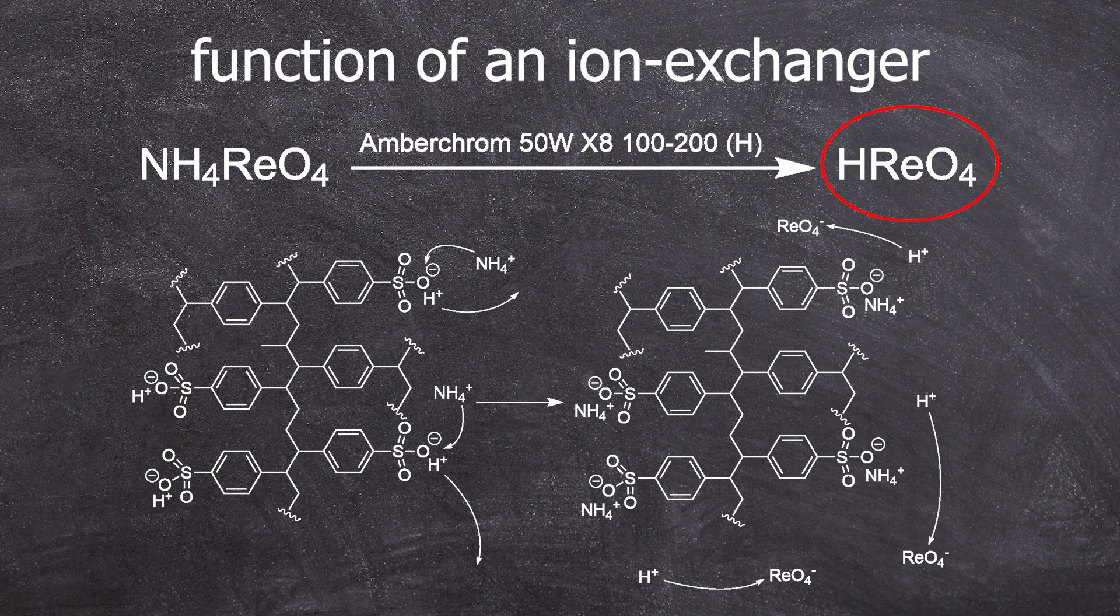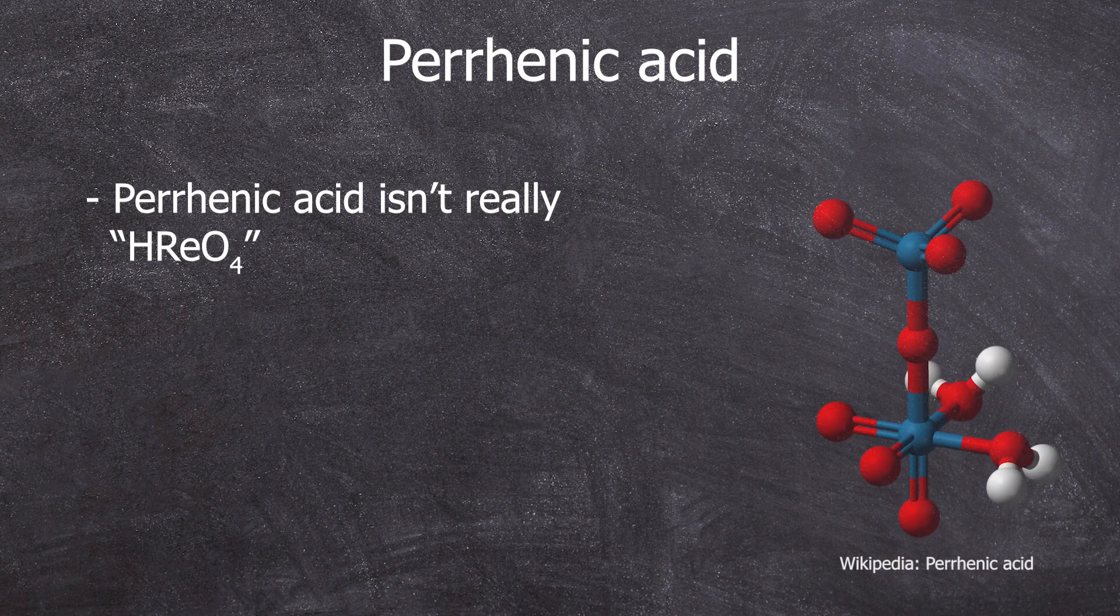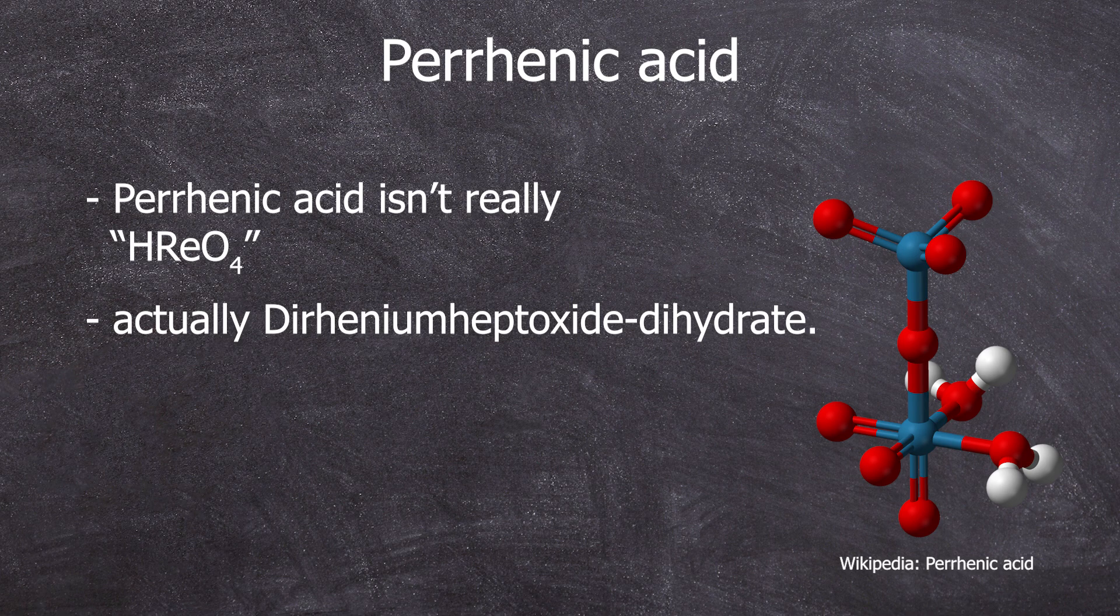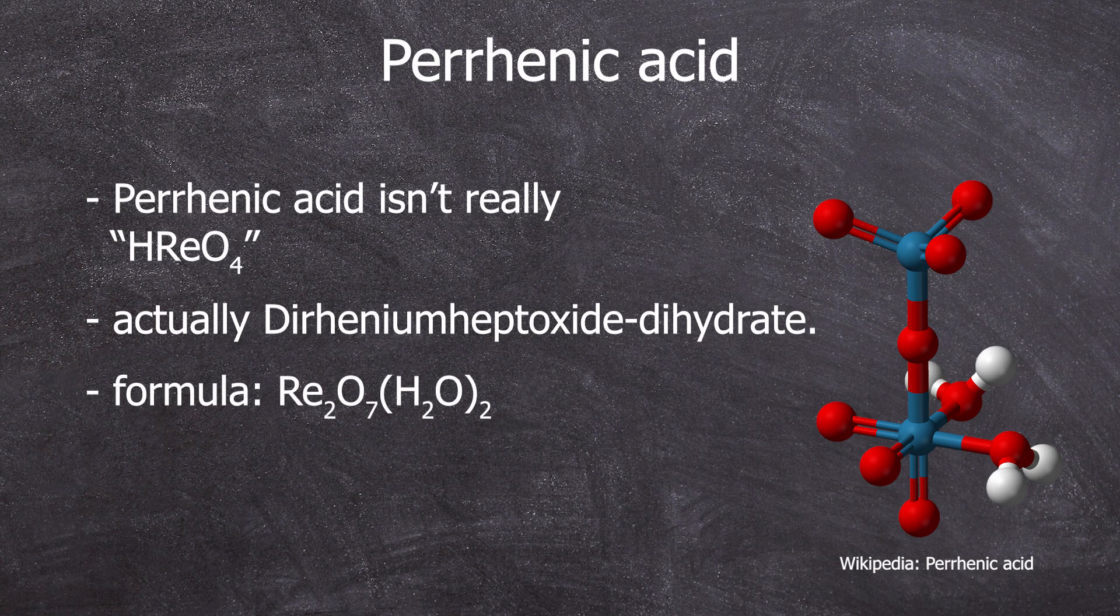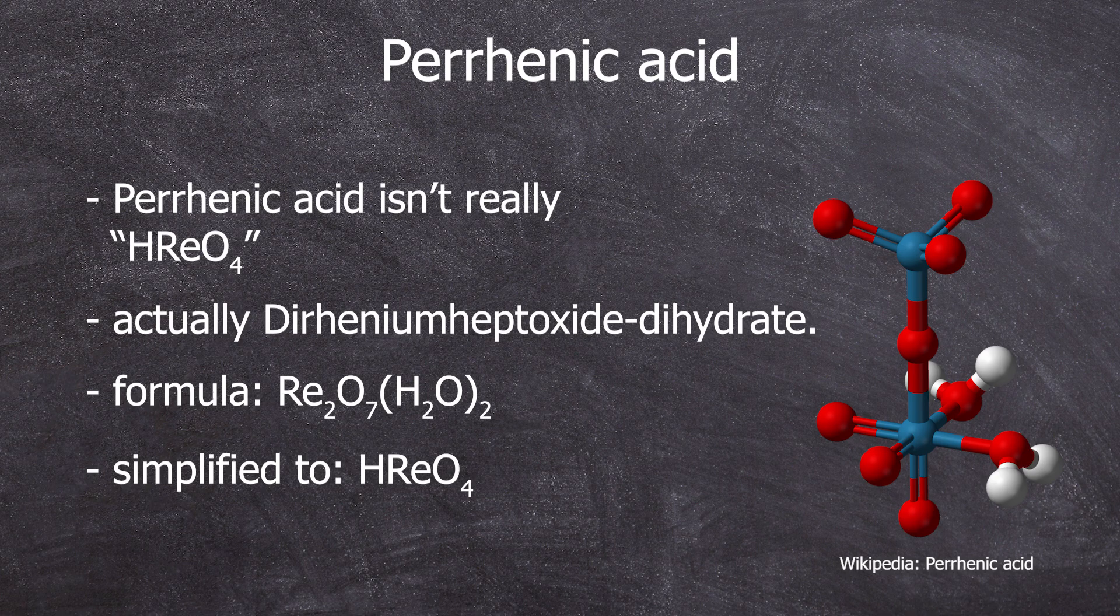Now I have to briefly talk about the perrhenic acid again. I wrote HReO4 here. That only halfway reflects the reality. Perrhenic acid is actually an interesting metal oxide compound with a structure where water is coordinated to one of the two rhenium atoms. So what I'm making in the video is actually better described as di-rhenium heptoxide dihydrate with the formula Re2O7·H2O2. You can actually get real HReO4 in the gas phase, but to keep the video a bit simpler and the graphics nicer, I will use this formula to describe the perrhenic acid.